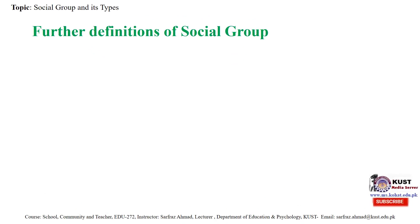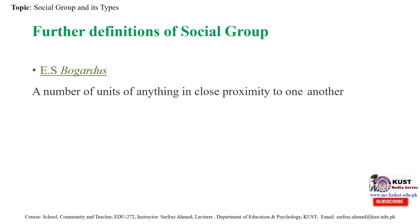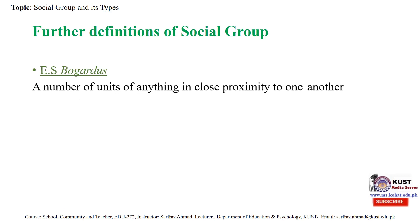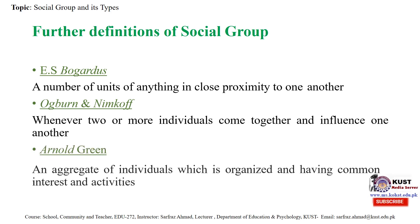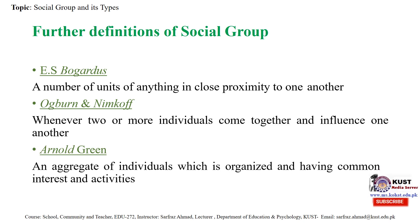Some other definitions of social groups: E.S. Bogardus said a social group is a number of units of anything in close proximity to one another. Ogburn and Nimkoff said that whenever two or more individuals come together and influence one another, that is called a social group. Arnold Green said it is an aggregate of individuals which is organized and having common interests and activities.